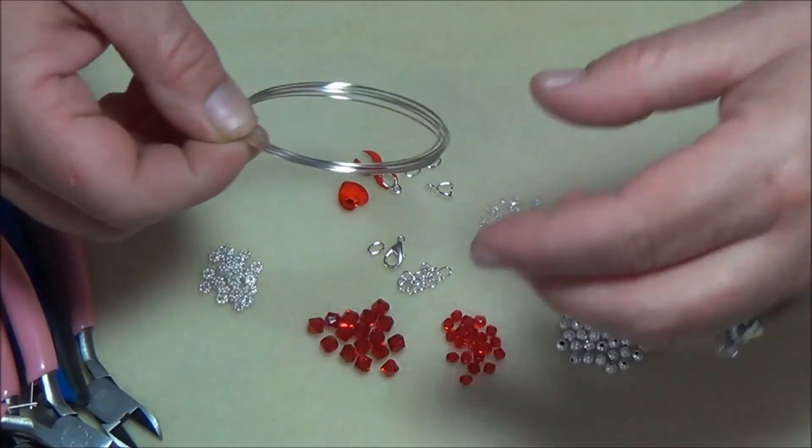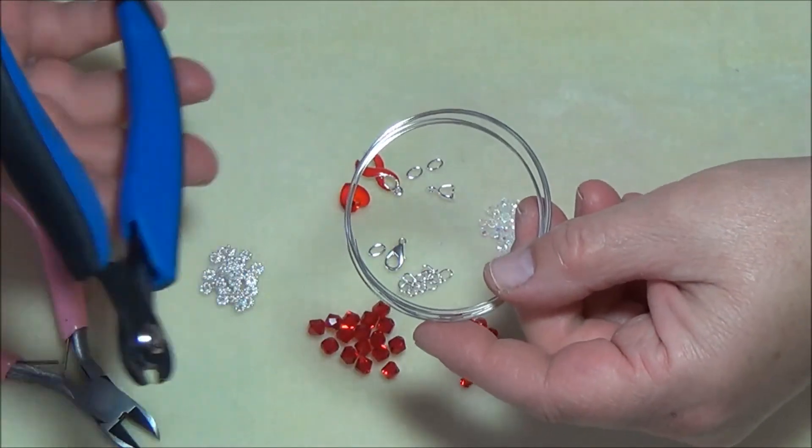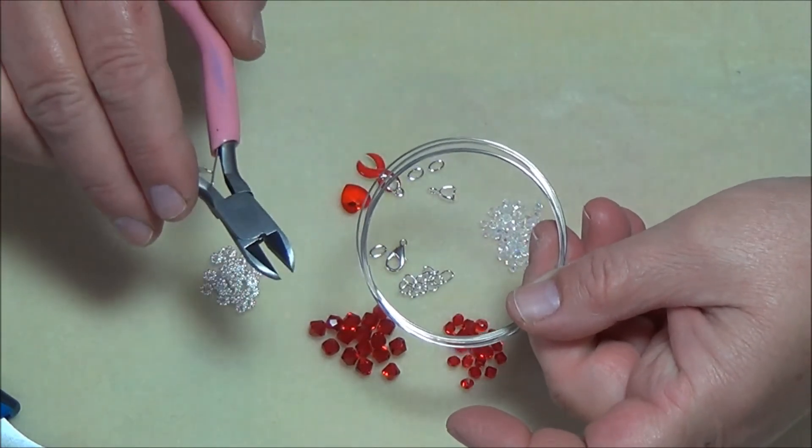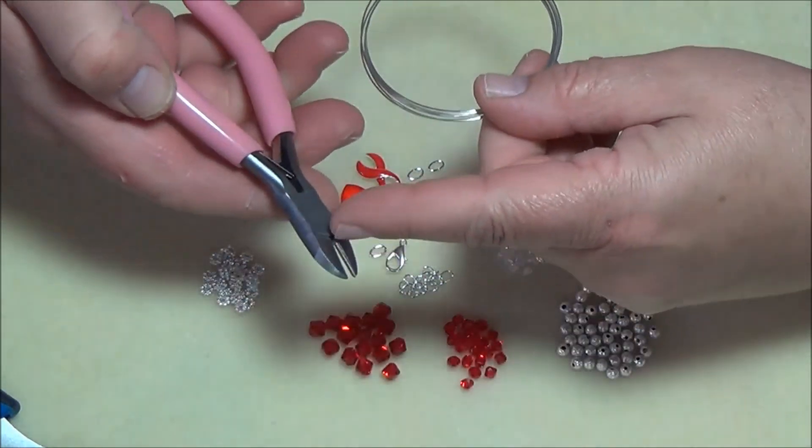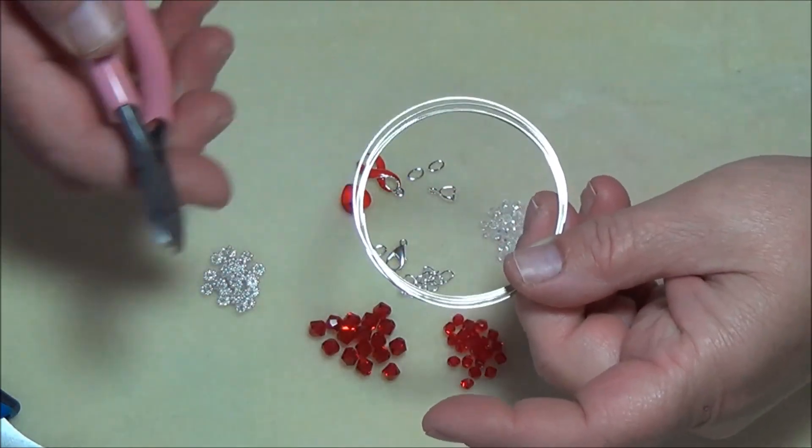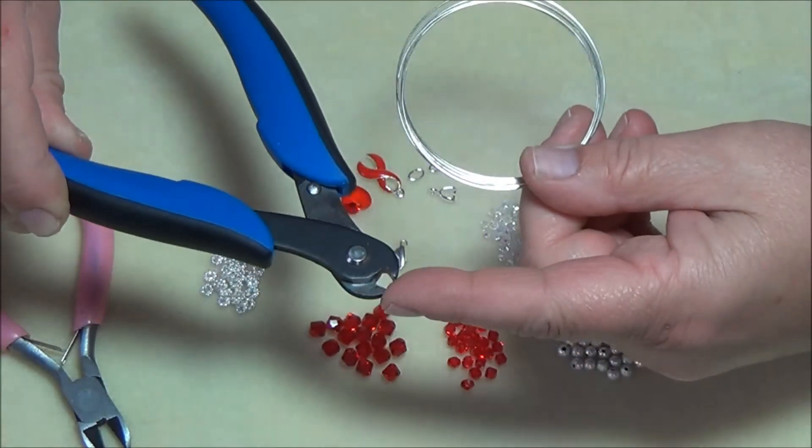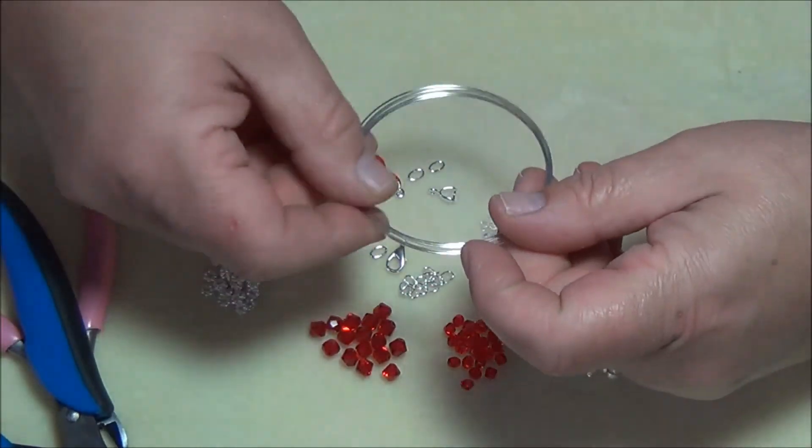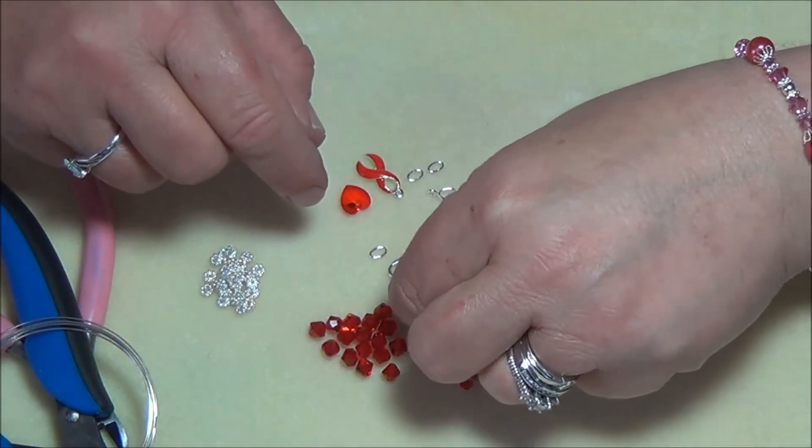Also, if you don't have a pair of memory wire cutters, do not cut memory wire with your good flush cutters like these. If you have an old pair of wire cutters and you don't mind getting gouges and cuts, go ahead and cut your memory wire with your old pliers. But I really highly recommend that you get a pair of memory wire cutters only because these cut so easy and they don't destroy. Now I'm going to use an extender chain, of course. I'm going to use a lobster clasp and for my lobster clasp I'm going to join it with an oval jump ring.